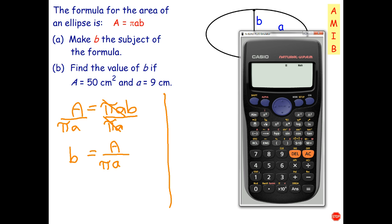So b equals I need the fraction button, A on top is 50. On the bottom we have pi times a. Well there's my pi button down there. Multiplied by and a is equal to 9. Quick check: 50 over pi times 9. All checks.